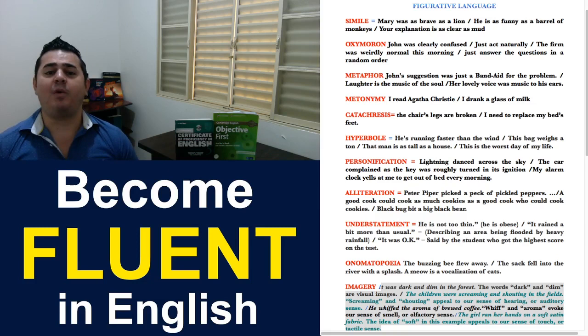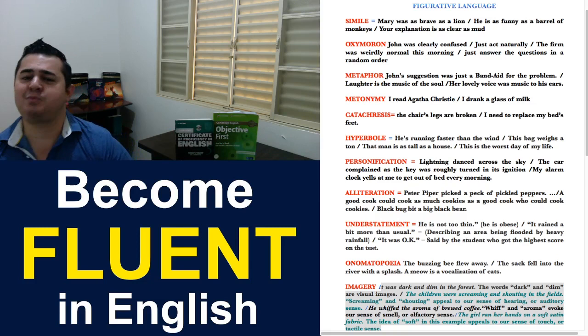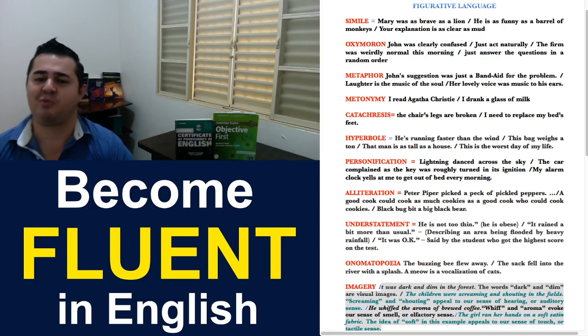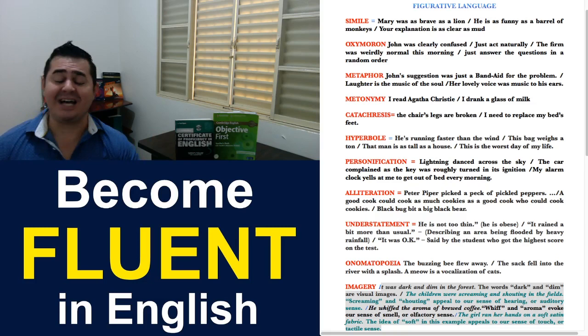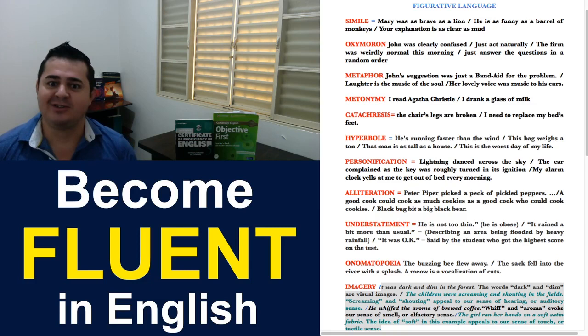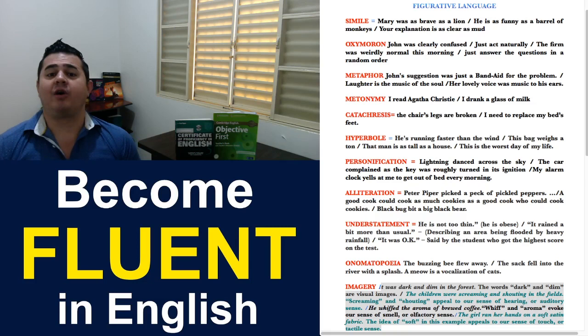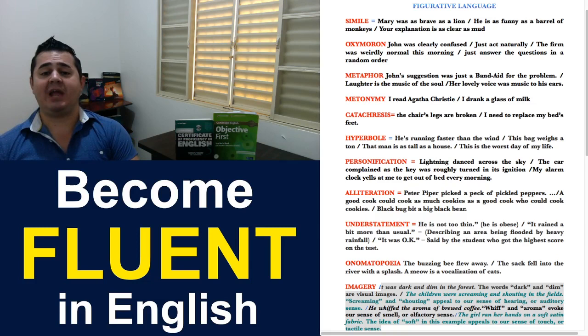Another example: Just act naturally. If you're acting, that cannot be natural because that's a fake. So, again, that's called oxymoron in language. Another example: The firm was weirdly normal this morning. So, if it was normal, how is it possible to be weird? They are opposites. Weirdly normal this morning. And the last one: Just answer the questions in a random order. If there is an order, that's not random. Because random means it has no order. So, in a random order, again, we use a feature called oxymoron in English language.